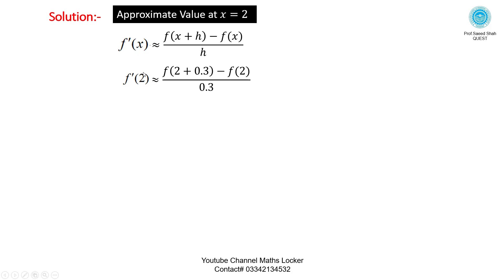Placing x equal to 2 and h equal to 0.3, then we have: f of 2 plus 0.3, minus f of 2, divided by 0.3. Simplified: f of 2.3 minus f of 2.